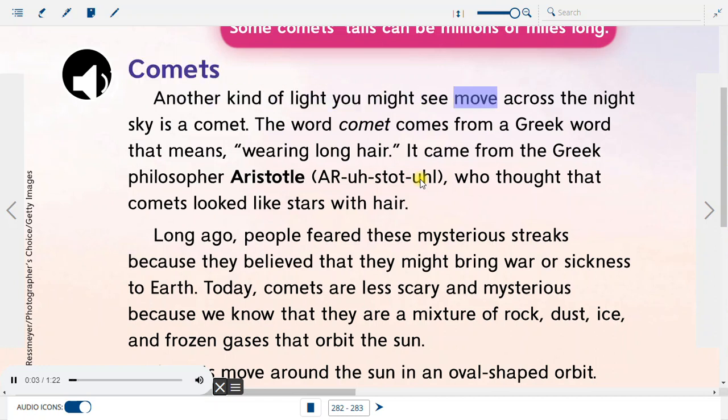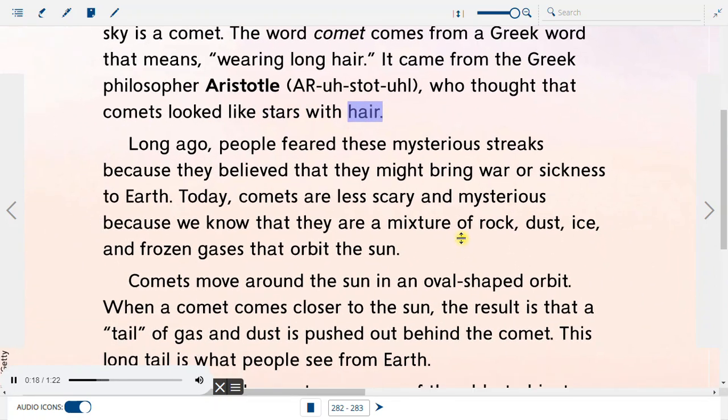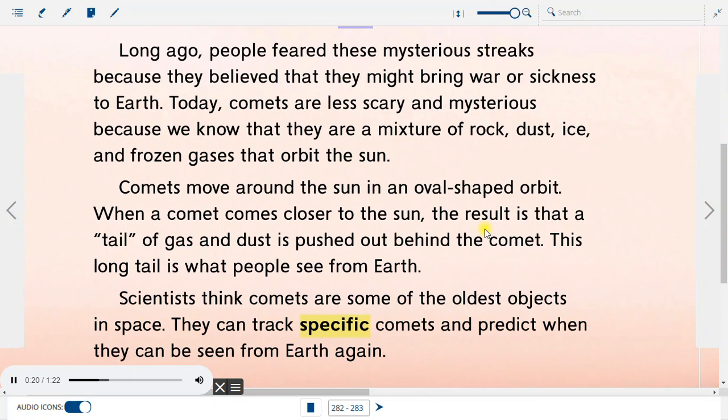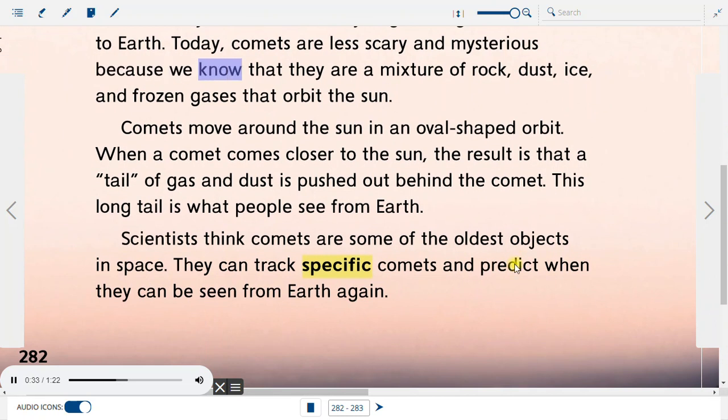Another kind of light you might see move across the night sky is a comet. The word comet comes from a Greek word that means wearing long hair. It came from the Greek philosopher Aristotle, who thought that comets looked like stars with hair. Long ago, people feared these mysterious streaks because they believed that they might bring war or sickness to Earth. Today, comets are less scary and mysterious because we know that they are a mixture of rock, dust, ice, and frozen gases that orbit the sun.